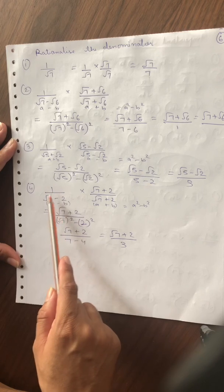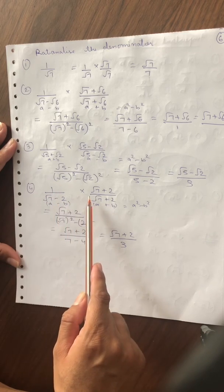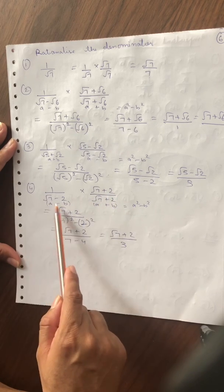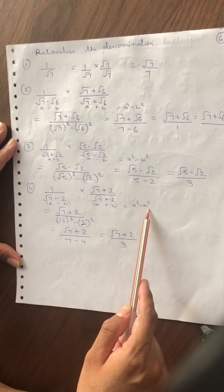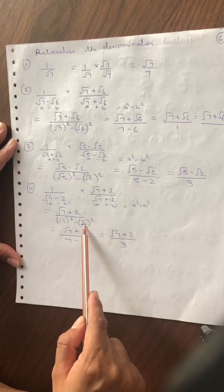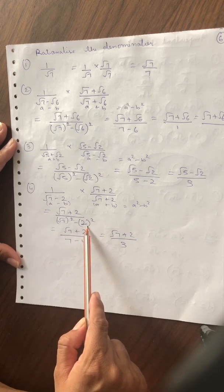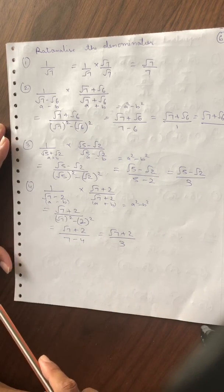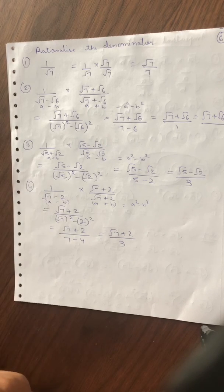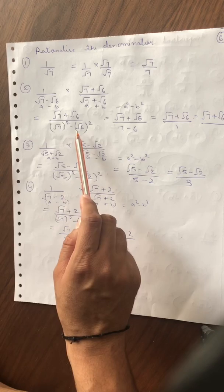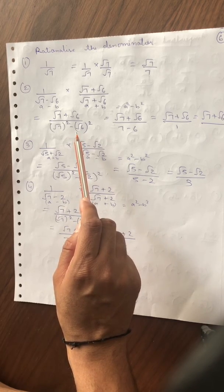Fourth sum में दिया है 1 upon (√7 − 2)। Conjugate लेंगे: root 7 plus 2 से ऊपर और नीचे multiply करेंगे। a minus b × a plus b = a² − b²। Root 7 का square 7, और 2 का square 4। तो 7 minus 4 = 3। So this is how we rationalize the denominator — सिर्फ denominator में जो भी root आता है उसको हटाना है, a² − b² formula के through।